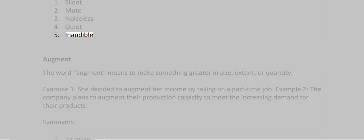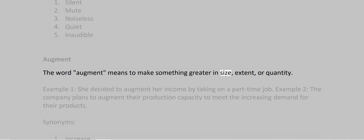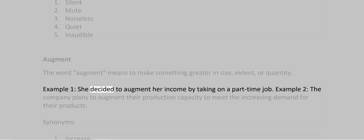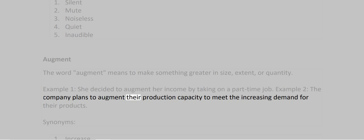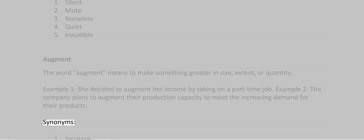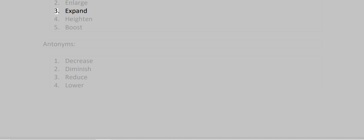Augment. The word augment means to make something greater in size, extent or quantity. Example 1: She decided to augment her income by taking on a part-time job. Example 2: The company plans to augment their production capacity to meet the increasing demand for their products. Synonyms: 1. Increase 2. Enlarge 3. Expand 4. Heighten 5. Boost. Antonyms: 1. Decrease 2. Diminish 3. Reduce 4. Lower 5. Cut.